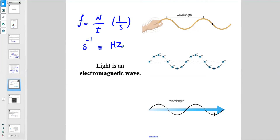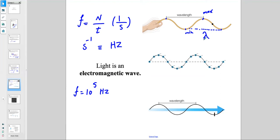For example, an electromagnetic wave with a frequency of 10⁵ Hz means the source is doing 10⁵ oscillations per second. We also have wavelength — the distance between two consecutive maximum points or two minimum points — shown by the symbol lambda (λ).